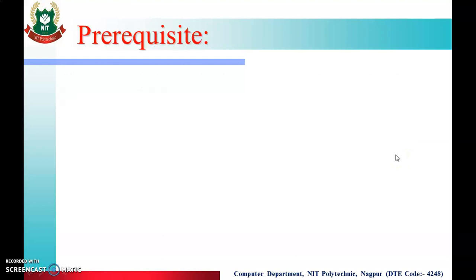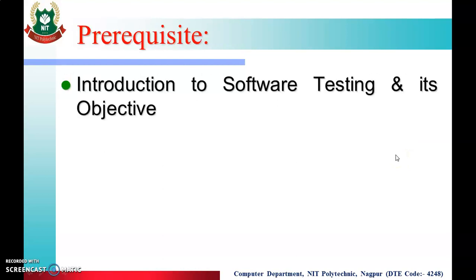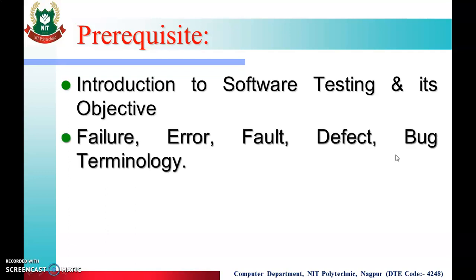As a prerequisite, in the previous lecture we have learned about software testing and its objectives, and about the terminology: failure, error, fault, defect, and bug.